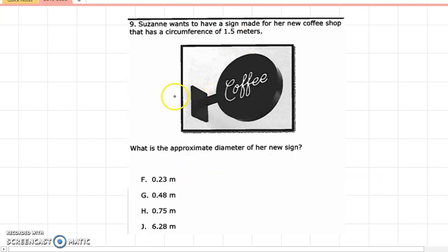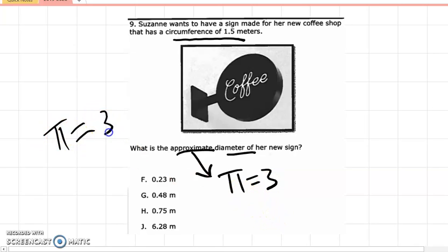Suzanne wants to have a sign made for her new coffee shop that has a circumference of 1.5 meters. What is the approximate diameter of her new sign? Approximate means to me mas o menos. It tells me that for pi, I don't have to use 3.14. So pi, if we wanted to get an exact answer, but I want to approximate, I want to make it as easy as I can for myself. And so we want to find the diameter. The equation for circumference is pi times diameter. So we want to find the approximate diameter.